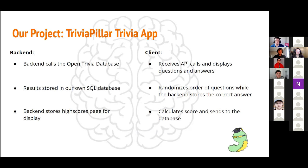Our project backend calls out to the OpenTrivia database, which allows us to call upon thousands of questions without the need to compile them ourselves. It then stores the results into our own SQL database for retrieval and also handles storing the high scores page for display. The client side of the program takes our API calls, randomizes the order of the questions and answers, and displays them in a readable format. It also calculates the score and sends it to the database to be retrieved later.